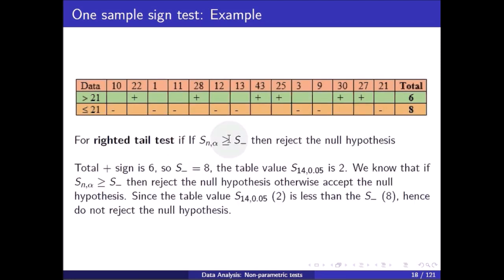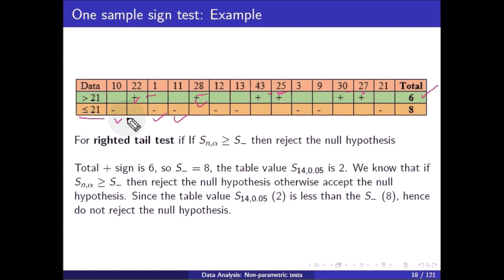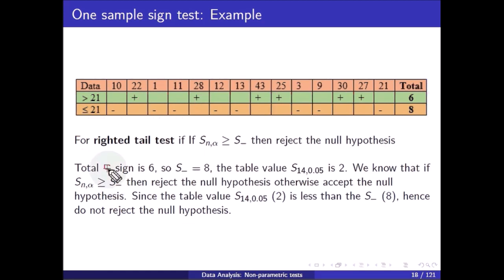We apply the sign table: 10 is less than or equal to 21 — minus; 22 is more than 21 — plus; 1 is less than or equal to 21 — minus; 11 is less than 21 — minus; 28 is more than 21 — plus; and so on. Counting plus signs: 1, 2, 3, 4, 5, 6 — total 6 plus signs. Counting minus signs: 1, 2, 3, 4, 5, 6, 7, 8 — total 8 minus signs. So S-minus = 8.